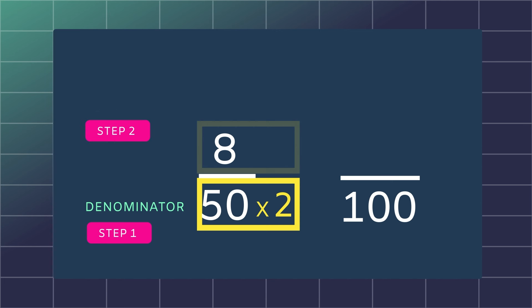Step 2: What you do to the bottom, you must do to the top. So multiply your numerator by 2 as well.